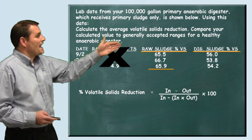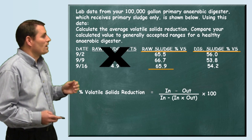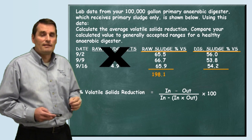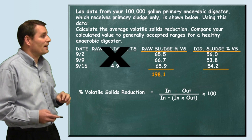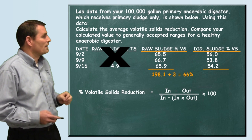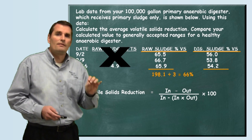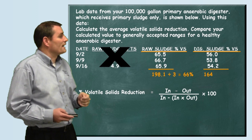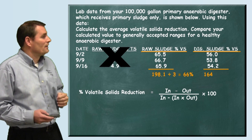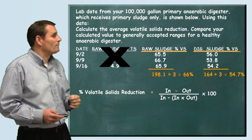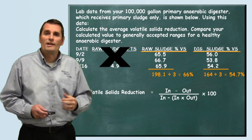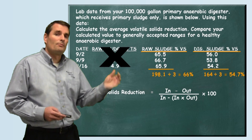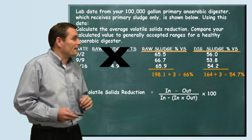We're going to add our percent volatile solids for our raw sludge. When we add those three numbers up, we get 191.8. Dividing that by three gives us our average percent volatile solids of our raw sludge: 60% volatile solids going into the digester. When we look at our digested sludge and add those three numbers up, we get 164 divided by three, giving us 54.7% volatile solids. We can now use these two numbers and plug them into our formula.